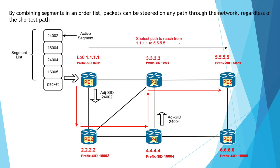But there may be a scenario in my network where I need to consider the lowest delay path. Let us say the path from PE1 to PE2 to PE4 to PE3 to PE5 is the lowest delay path. In this scenario multiple labels will be pushed on top, just like in the flight baggage scenario where multiple labels were put on your bag. The top label — the active segment — 24002 is the adjacency SID label between PE1 and PE2.